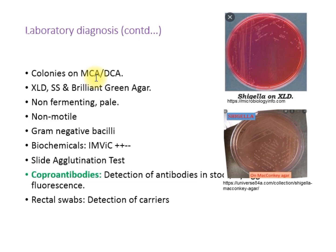Culturing is done on media such as MacConkey agar (MCA), DCA (deoxycholate citrate agar), XLD (xylose lysine deoxycholate agar), SS (Salmonella-Shigella agar), and brilliant green agar. On these media, Shigella forms non-lactose-fermenting colonies which are pale in color. The colonies are further identified by Gram staining as gram-negative bacilli; they are non-motile. The biochemical IMViC reaction shows a plus-plus-minus-minus pattern.